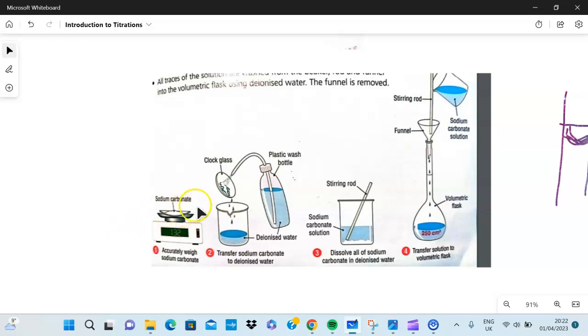First of all, using the example of sodium carbonate, you have to accurately weigh it with a balance. You find the mass of sodium carbonate. This structure here is called a clock glass. Some schools use plastic weigh boats. You put that into a clean beaker and then you use a plastic wash bottle with deionized water. Something very important to say is deionized water.